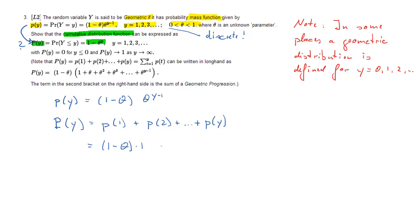We can write down the formula for each of these. Probability for the first outcome is 1 minus theta times 1. For y equals 2 is 1 minus theta times theta all the way up to 1 minus theta times theta to the power of y minus 1. That's according to the given mass function.